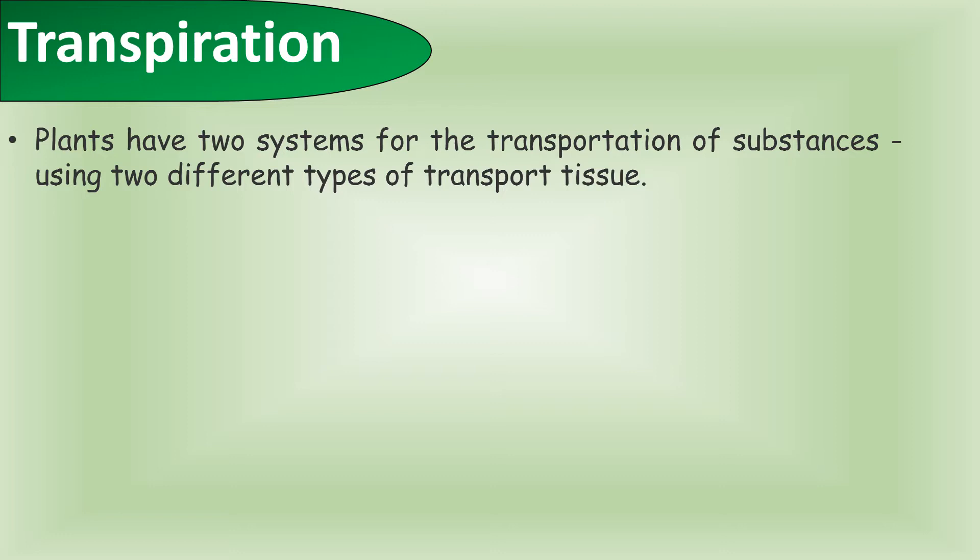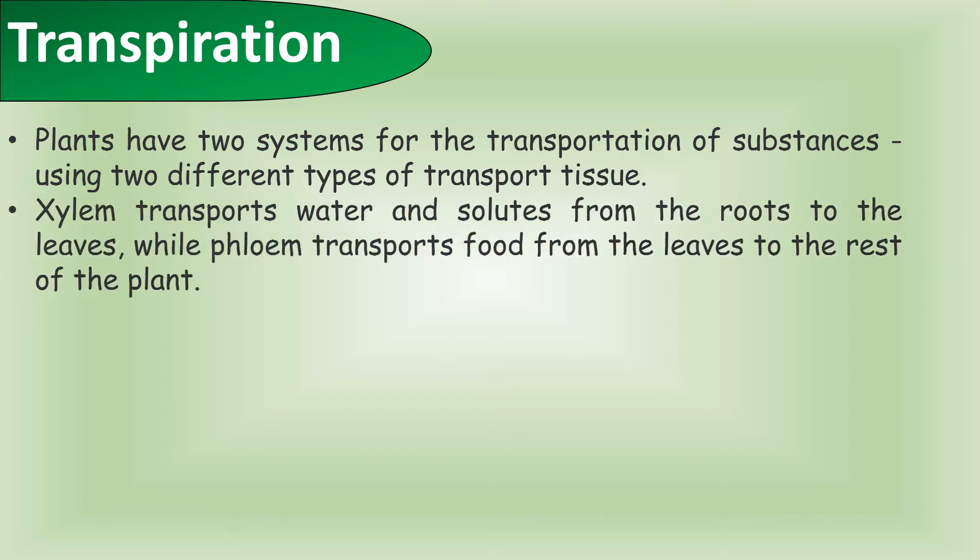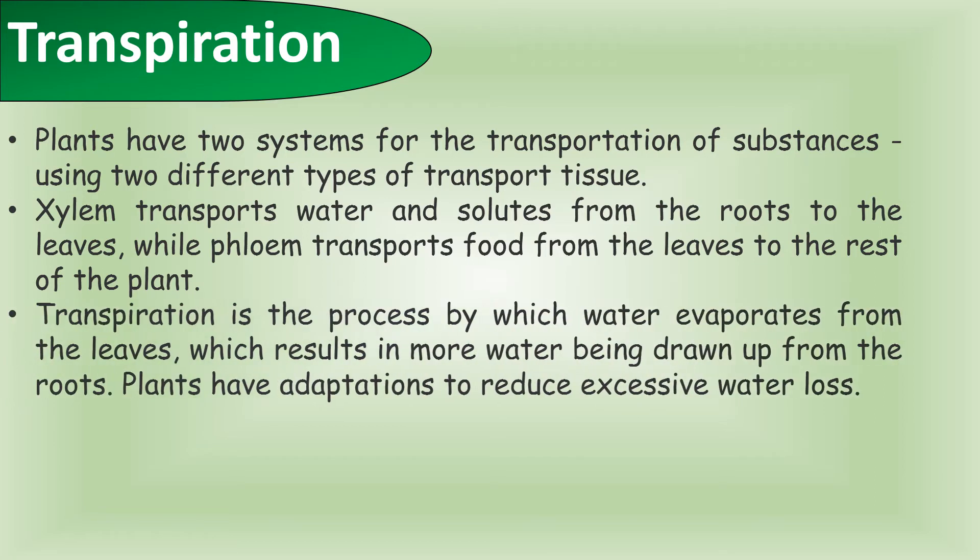Plants have two systems for the transport of substances using different types of tissues. Xylem transports water and solutes from the roots to the leaves, while the phloem transports food from the leaves to the rest of the plant. It's important to remember that the phloem are transporting glucose from a source to a sink.